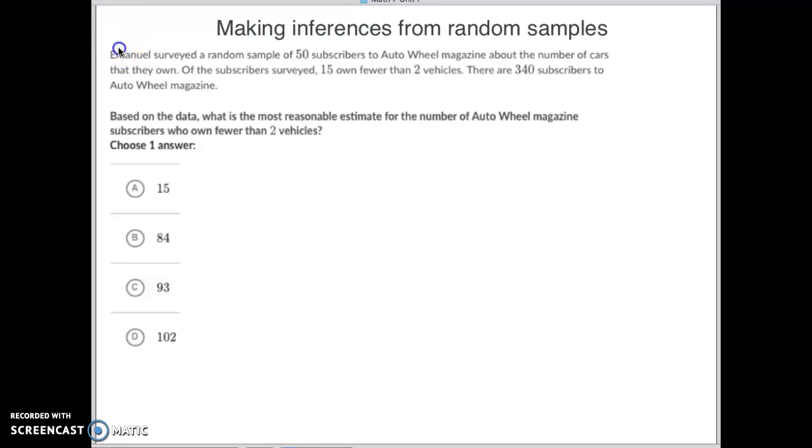So, Emanuel surveyed a random 50 subscribers to an Auto Wheel magazine about the number of cars they own. Of those surveyed, of the 50 people surveyed, 15 said they own fewer than two vehicles. There's 340 subscribers to the magazine in all. So, the question is, how many of the total population of 340 would that be?